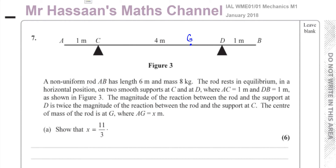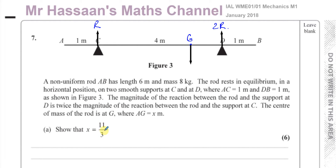We don't know the exact reaction force at C, but we know the reaction force at D is twice the reaction force at C. So if I call the reaction at C as r, then the reaction at D is 2r. Since the reaction force at D is greater than at C, it's more likely that the center of mass is closer to D. We can see that 11 over 3 is more than 3, so it is indeed closer to D.